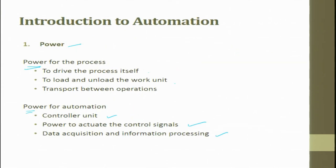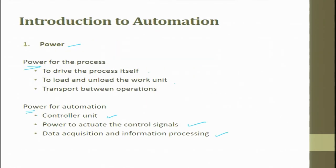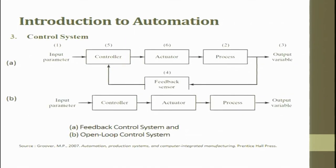In automation, we have power, program of instruction, and control systems. In a closed loop system, the input parameter goes to a controller, then to an actuator and processor; feedback is provided, the error signal is generated, and the process is corrected. If there is no feedback, it is an open loop system; if there is feedback, it is a closed loop system.